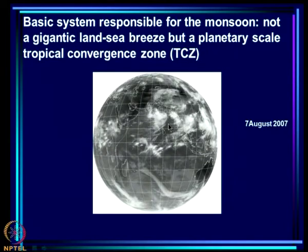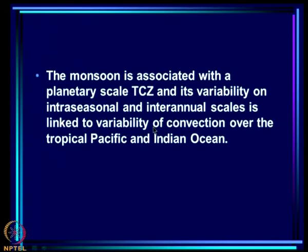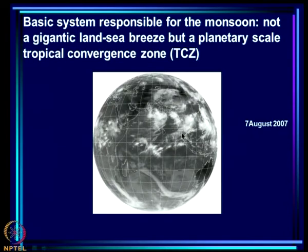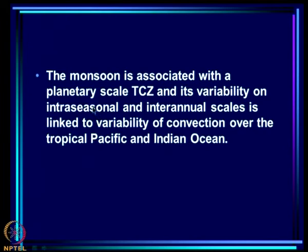This is an important thing we learnt during these lectures: the monsoon is associated with a planetary scale tropical convergence zone, and its variability on intra-seasonal and inter-annual scales is linked to the variability of convection over the tropical Pacific and Indian Ocean. The monsoon system is by no means restricted to the Indian longitudes — it extends across the region, and almost all systems that give us rain are generated over or near the equatorial Indian Ocean. The variability of the Indian monsoon is thus linked to variability of convection over the tropical Pacific and Indian Ocean.